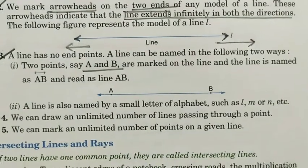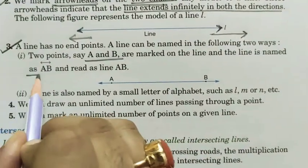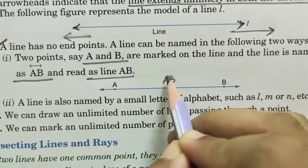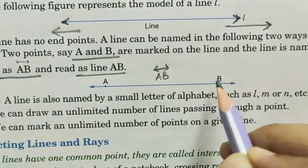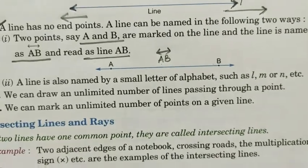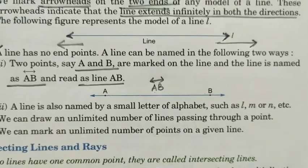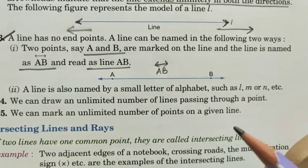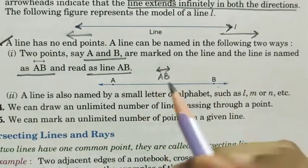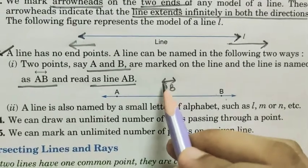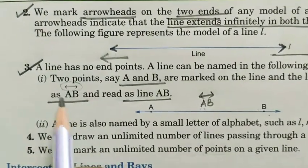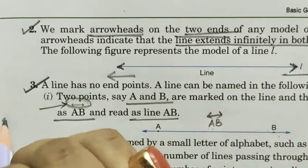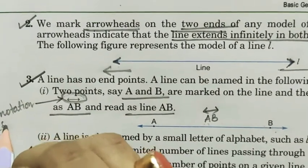Two points say A and B are marked on the line and the line is named AB and read as line AB. When we geometrically denote a line, we write it this way. There are two points on the line, so we give the line a name. As I said earlier, everything has its particular name. Each thing has a particular name. Without any name, we cannot distinguish them. So every line also has to be given a name. If two points A and B are on the line, we denote this line as AB. Also a line is named by a small letter of alphabet, such as l, m or n, etc. Look at here, this is line l. Small letter denotes. We denote point by using a single capital letter. We can also name a line by a small letter, not capital letter: l, m, n.